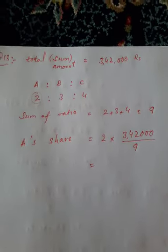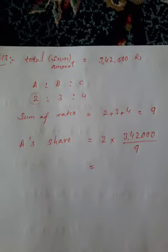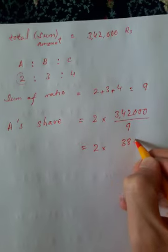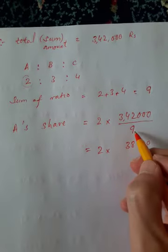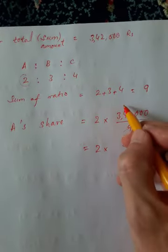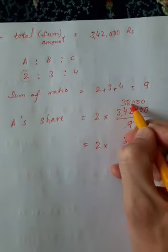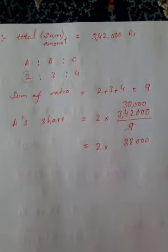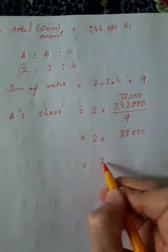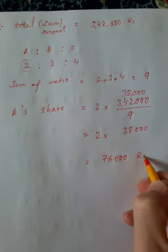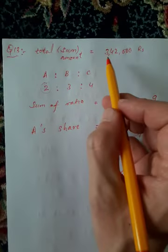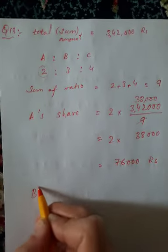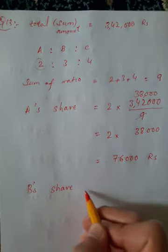342,000 divided by 9, then multiply by 2. This gives us 76,000 rupees for A's share.